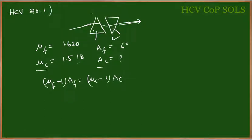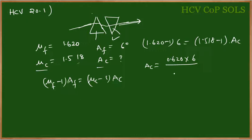If we substitute, 1.620 minus 1 times 6 degrees equals 1.518 minus 1 times Ac. So Ac is equal to 0.620 times 6 divided by 0.518. Simplifying, we will see that the angle is 7.2 degrees.